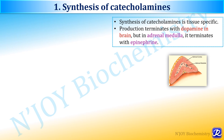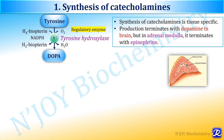The precursor for catecholamine synthesis is tyrosine. It undergoes hydroxylation by the enzyme tyrosine hydroxylase, which is the regulatory enzyme. This is a monooxygenase enzyme that requires tetrahydrobiopterin as a cofactor. If this cofactor is deficient, tyrosine cannot be converted to DOPA. NADPH is also utilized in this reaction. In the first reaction of catecholamine synthesis, DOPA — that is dihydroxyphenylalanine — is formed.